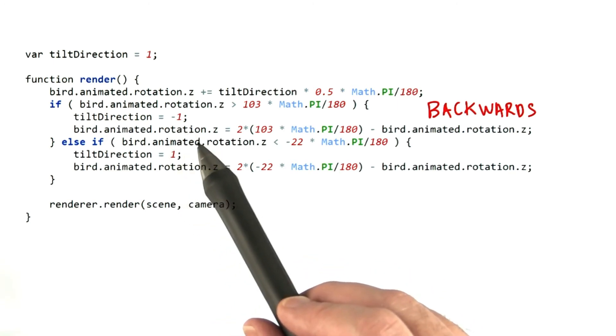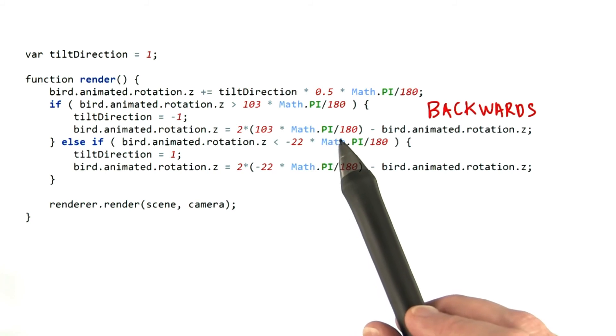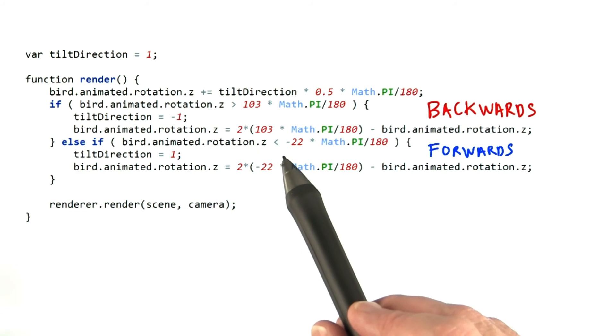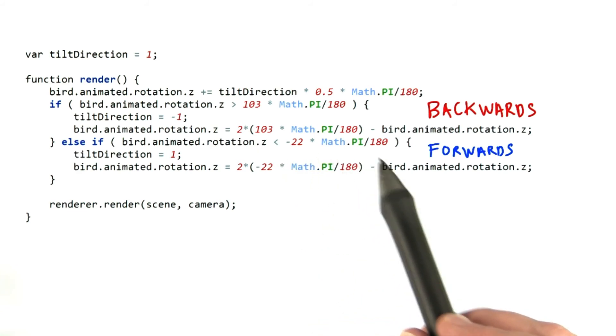Whatever amount the bird has moved past 103 degrees is used to move it the other way. Now the rotation angle is decremented by half a degree until a limit of negative 22 degrees is reached, which causes it to reverse again.